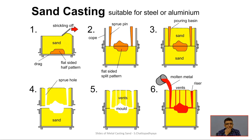Sand casting uses sand as the molding material along with a pattern. The pattern is the replica of the object to be produced, made of wood most of the time, but also possible in metal and plastic. The pattern is shaped and molding sand is packed around it to give the proper shape. Then the pattern is removed to prepare a cavity, and this cavity is utilized for pouring molten metal. After solidification, that shape is generated, and with some post processing the finished product comes out.